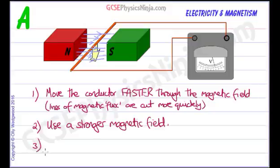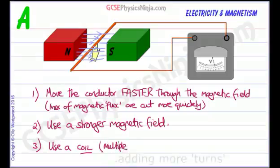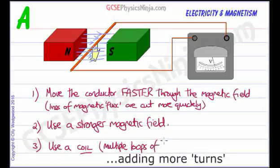And number three, what we could do is we could loop this wire around on itself a couple of times, several times, to make a coil. So we could use a coil, which would be multiple loops of the circuit.